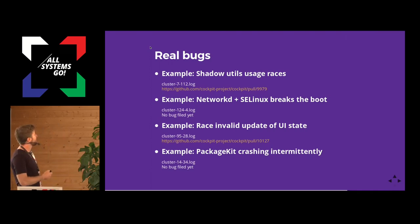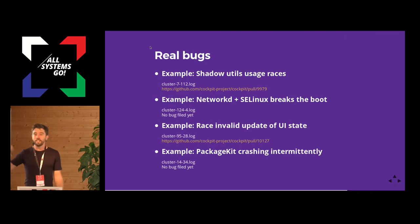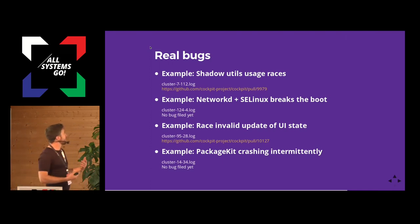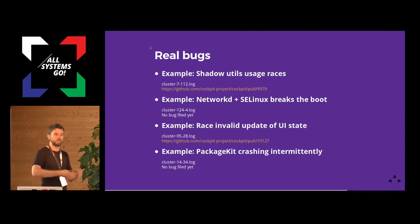And then we actually find real bugs — this is the interesting part. There's a pull request that got merged showing we were accessing various APIs in a completely racy way. The root cause was that we were executing useradd and group commands to modify user info on the system — we should have serialized them. This is the kind of bug a user would find and we'd say 'we can't reproduce that,' but the tests were finding it. There's another cluster brewing right now — SE Linux has screwed up with networkd, happened four times recently in the last two weeks, preventing a system from booting at all. There were also PackageKit crashes, LVM crashes, various SE Linux issues happening intermittently during boot with races — this stuff comes up regularly and you start to find these bugs.